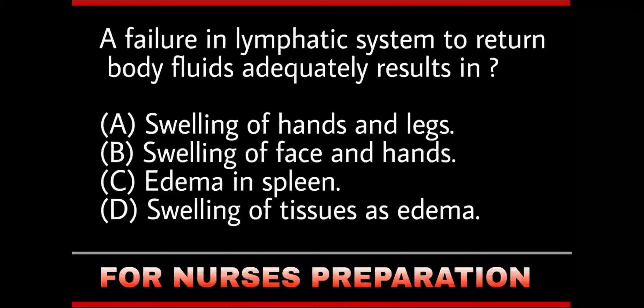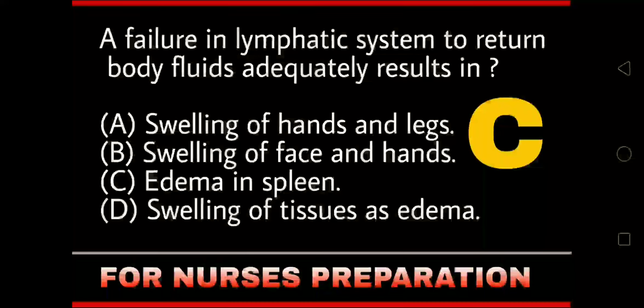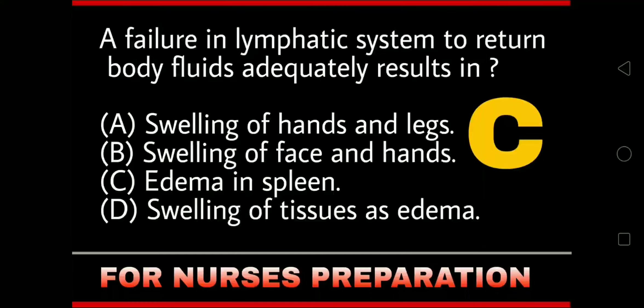First question: A failure in lymphatic system to return body fluids adequately results in — swelling of hands and leg, swelling of face and hands, edema in spleen, or swelling of tissues as edema. The right answer is option C: edema in spleen. If the lymphatic system fails in returning body fluids adequately, it results in edema in the spleen.